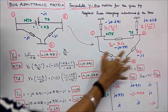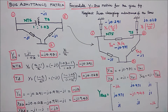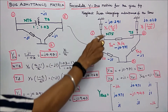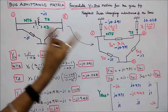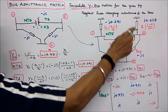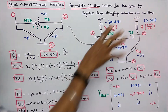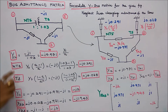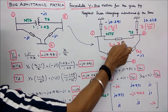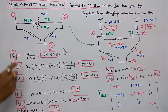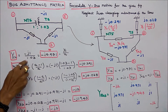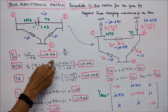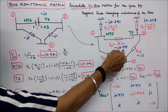Second step: we have to draw the equivalent circuit. On the non-tap-setting side, the line charging admittance is Yt times (A minus 1) divided by A, where Yt equals minus J1. On the tap-setting side, it is Yt times (1 minus A) divided by A squared. So Y12 equals Yt divided by A, which is minus J1 divided by 1.03, equal to minus J0.971.